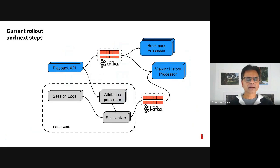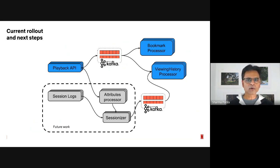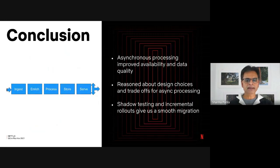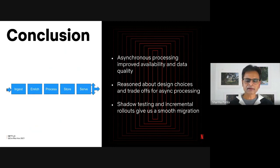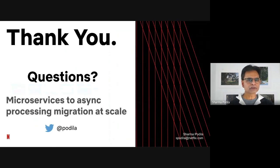The items currently in production include the playback API, Kafka, the viewing history processor, and the bookmark processor. We have the rest of the system dealing with other attributes — an attributes processor and session logs — which present new challenges because the data size is very large, way larger than what you'd normally write into Kafka. To summarize: asynchronous processing improved availability and data quality for us. We reasoned about design choices and trade-offs appropriate for our environment, and shadow testing with incremental rollout gave us a confident and smooth migration. I invite you to think about how this applies to your environment and what trade-offs you might make for a similar journey.